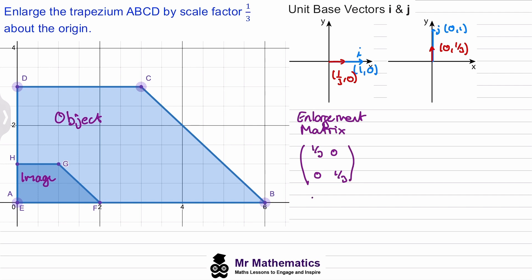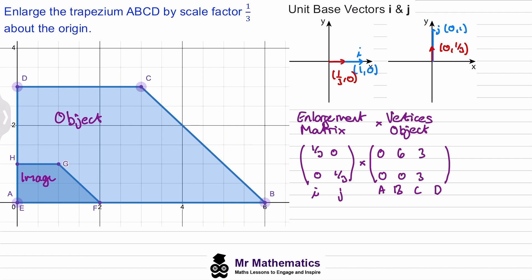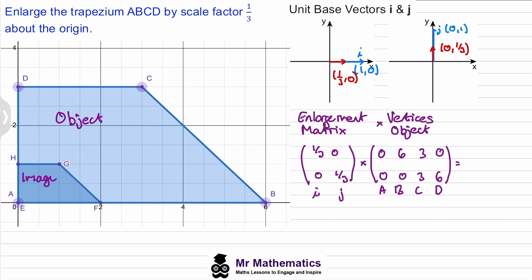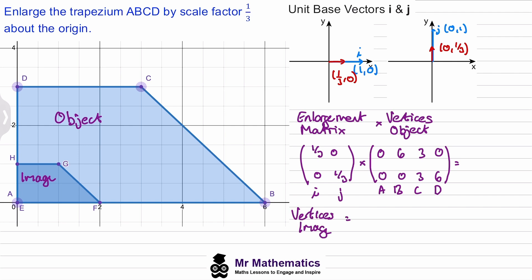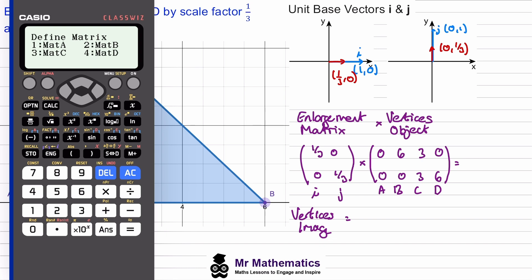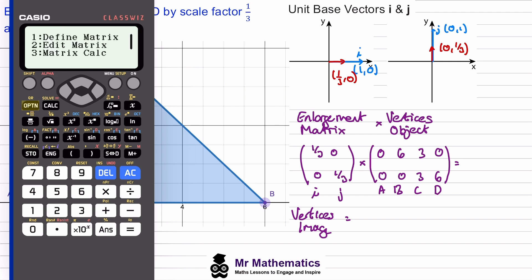These are the images of i and j. Then we'll multiply this by the vertices of the object. We know A has coordinates (0, 0), B has coordinates (6, 0), C has coordinates (3, 3), and D has coordinates (0, 6). When we multiply these together we get the vertices of the image. Again we'll do this using a calculator — we'll define matrix A, then the vertices of the object, and go to option three for matrix calculations.